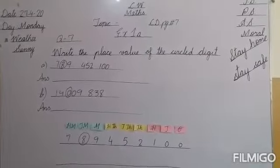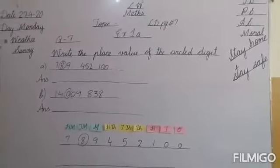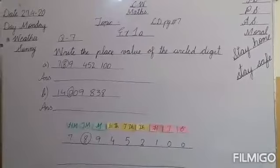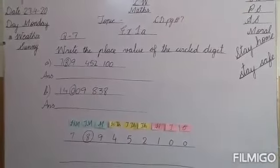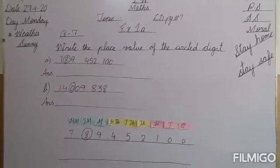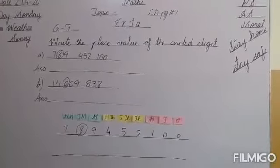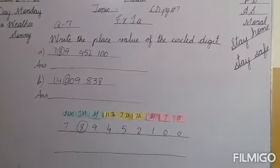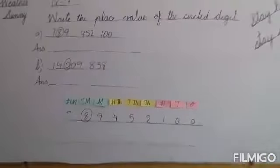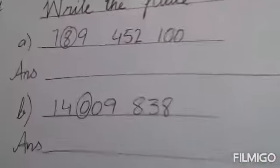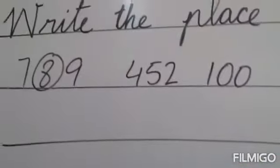Students, our today's topic is exercise 1A, that is on your count on book page number 7. We have to do question number 7. The question is: write the place value of the circled digit. Some digits are given and you have to write its place value.